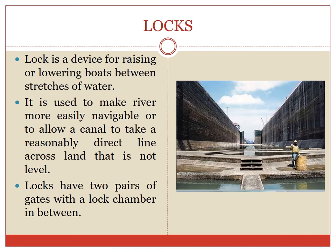Moving across to the lock: a lock is a device for raising or lowering boats between stretches of water. It is used to make a river more easily navigable or to allow a canal to take a reasonably direct line across land that is not level. Lock gates have two pairs of gates with a lock chamber in between. The gates can be closed against a sill raised 60 cm above the gate floor. In order to fill or empty the lock, sluiceways are formed in the side walls. The lock is paved at the bottom by inverted arch flooring to resist the upward water pressure when the lock level is low.